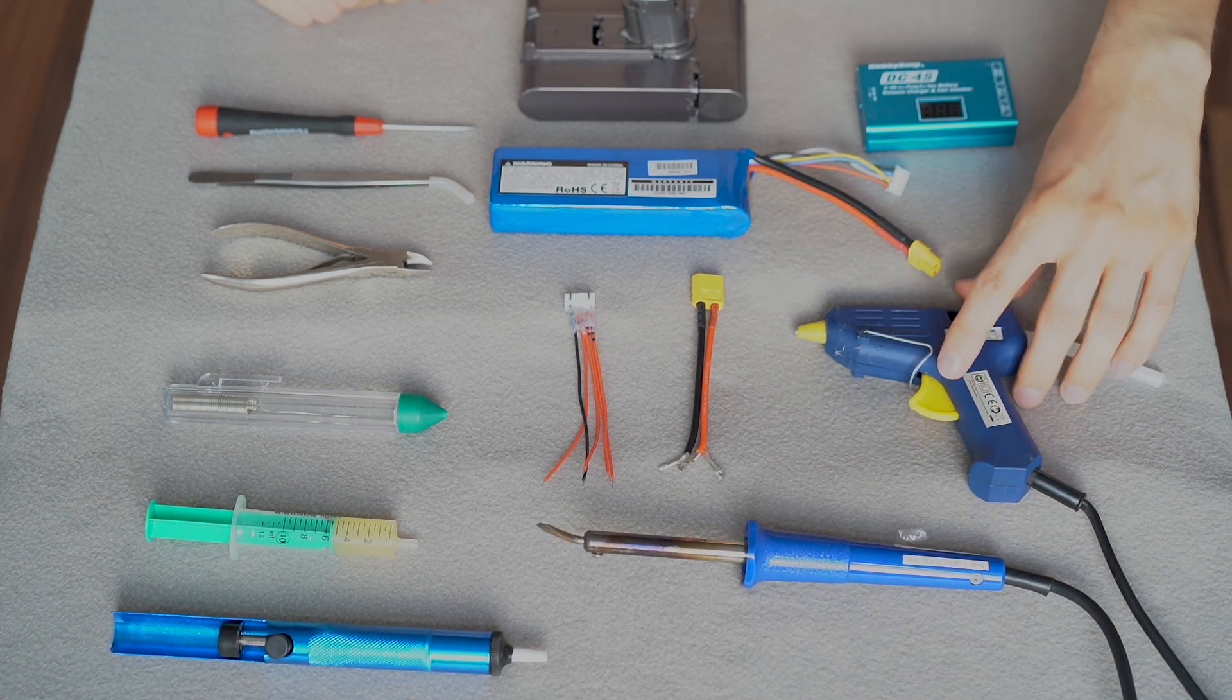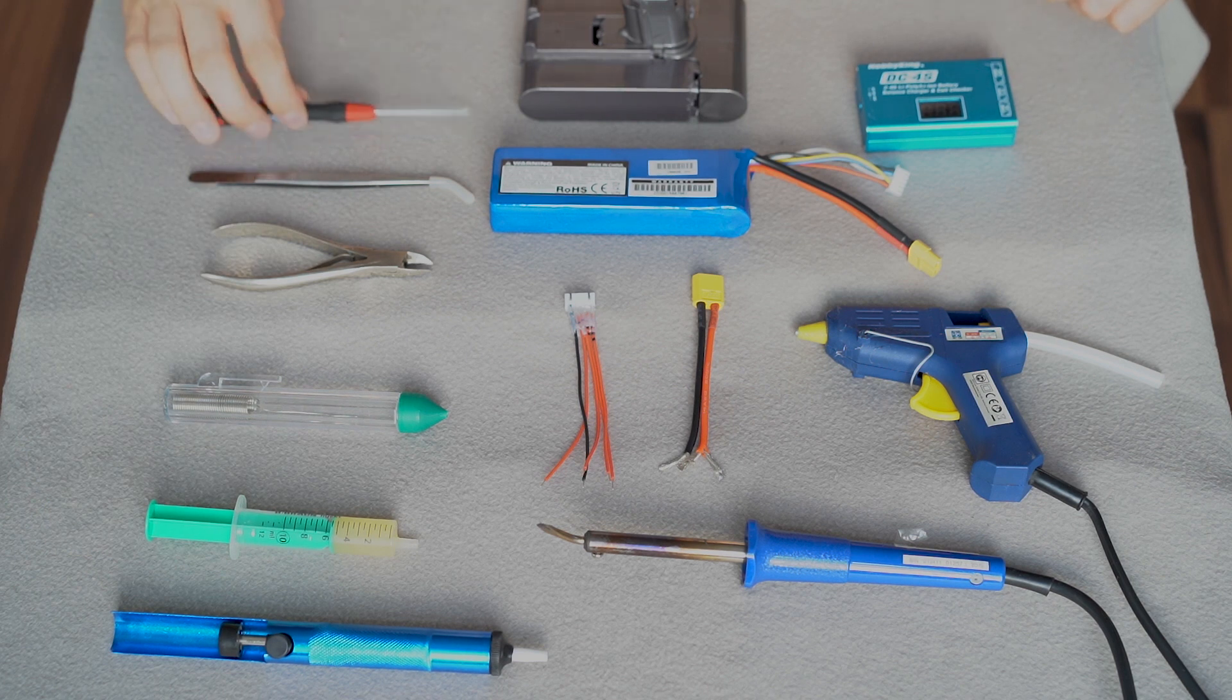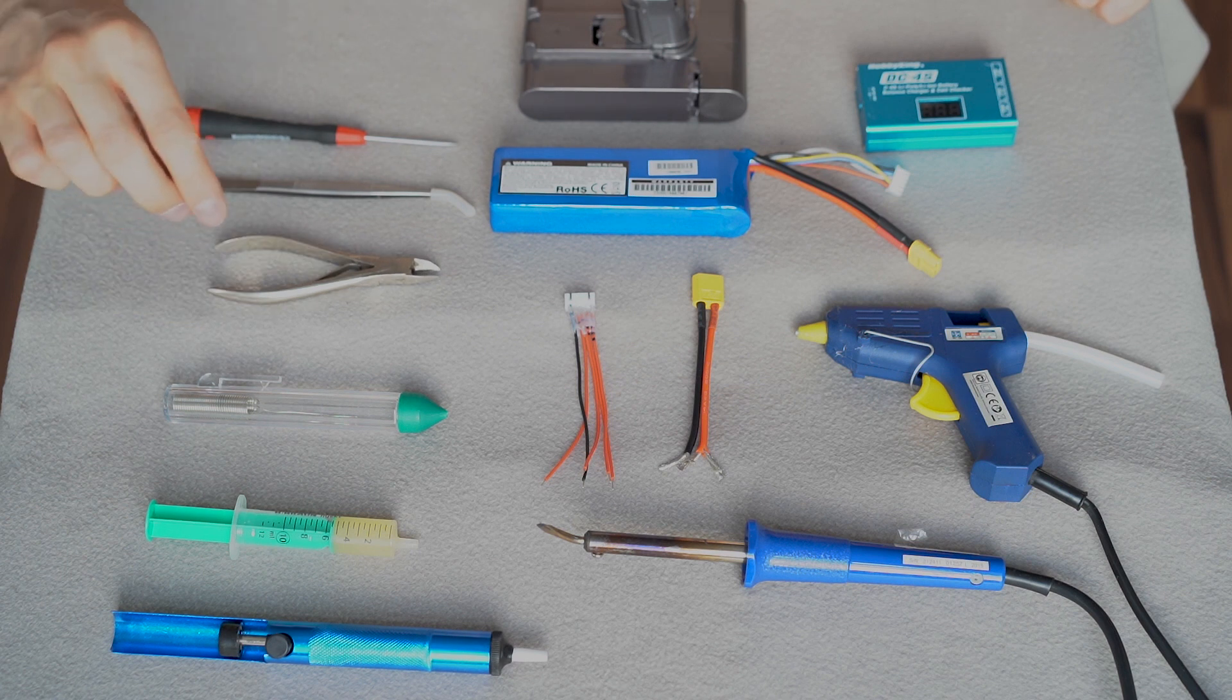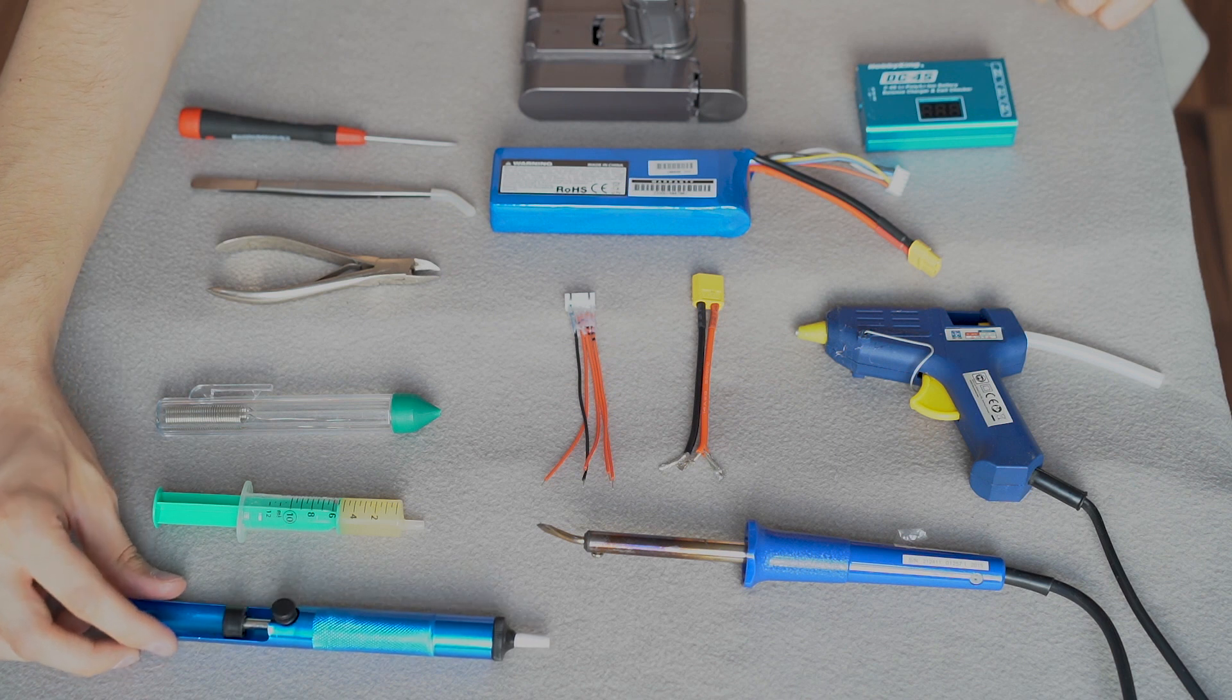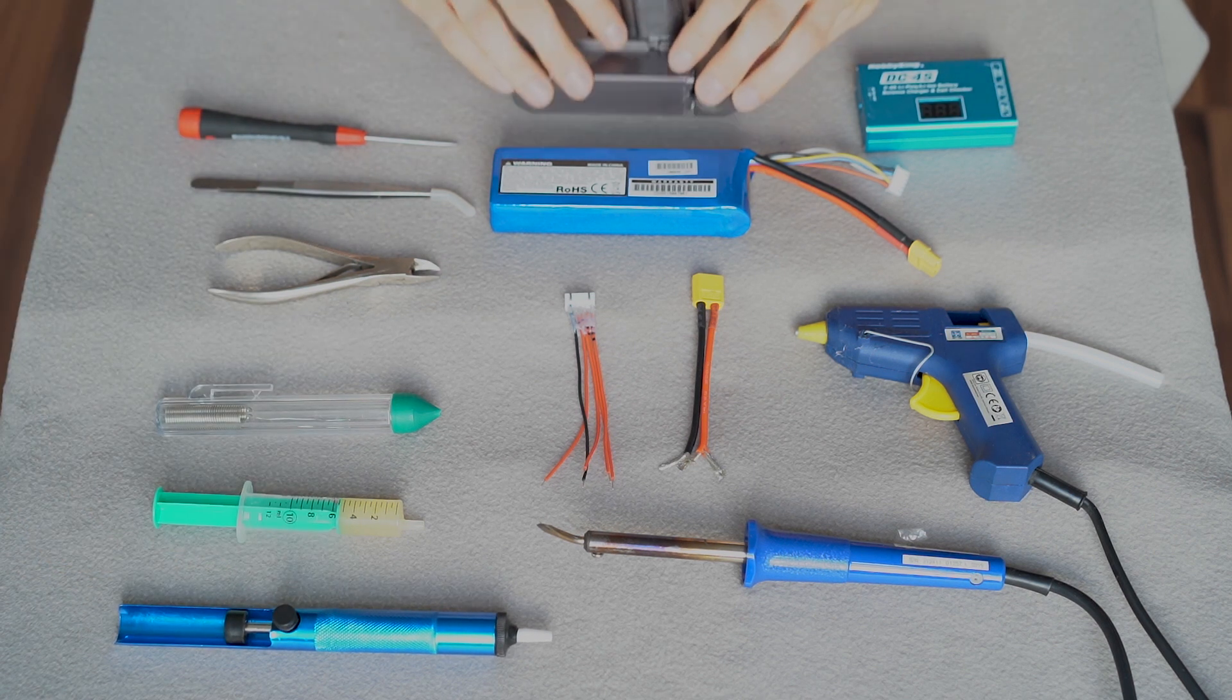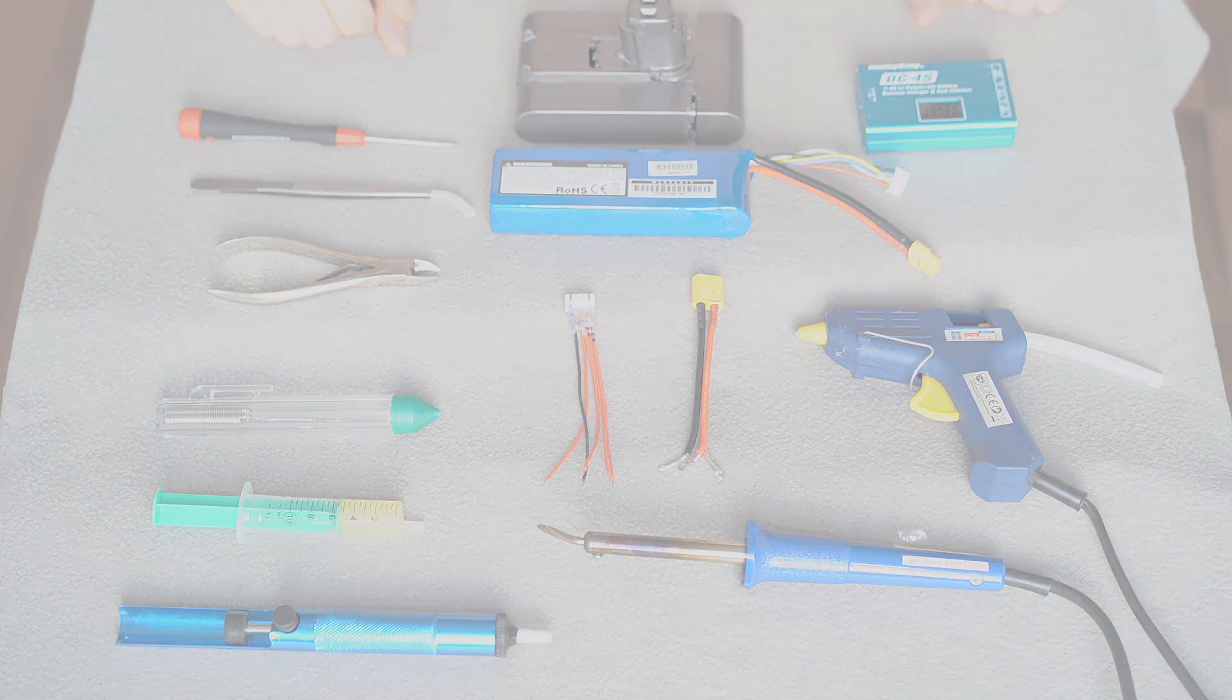Other than that you will need standard soldering iron, hot glue gun over here, and some standard tools to solder and dismantle the battery. So I use flathead screwdriver, pair of tweezers, cutting tweezers, solder of course, soldering flux, and this isn't necessary but it helps a lot, this is a vacuum pump to desolder wires from the original battery. So basically this is all you will be needing to do this modification.